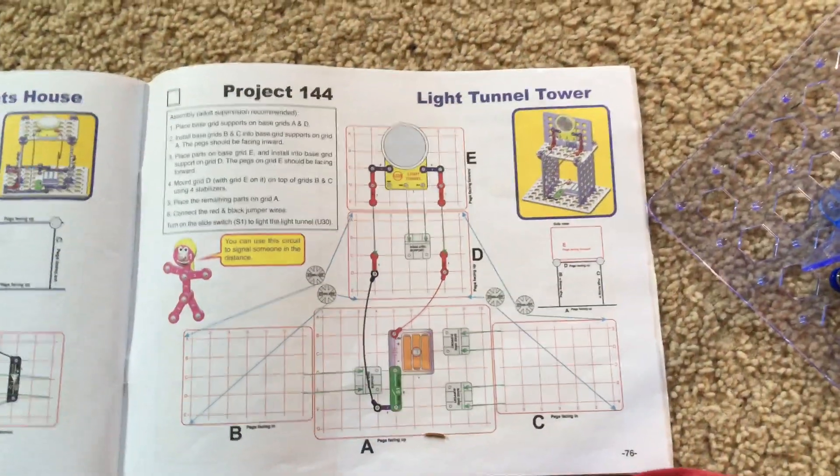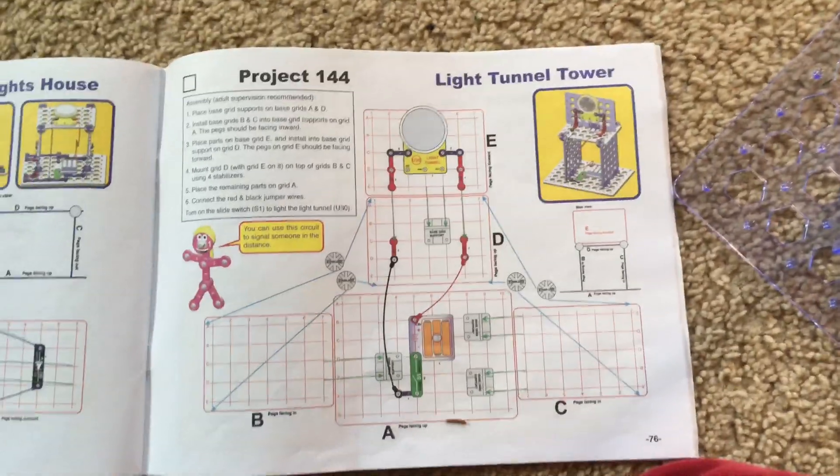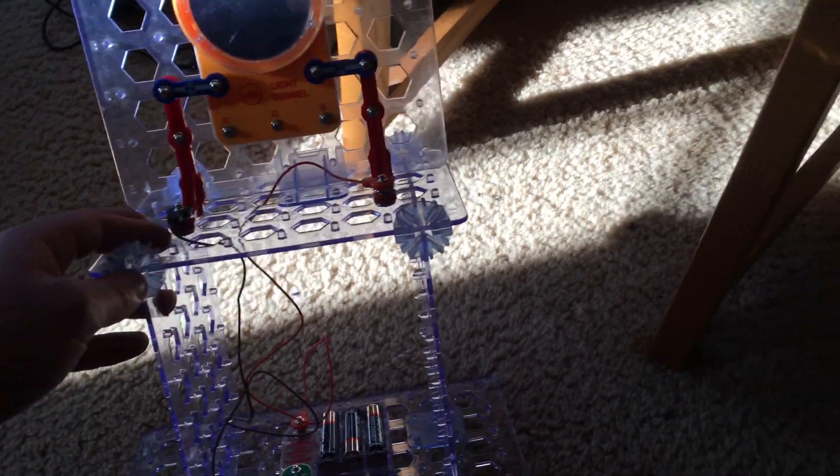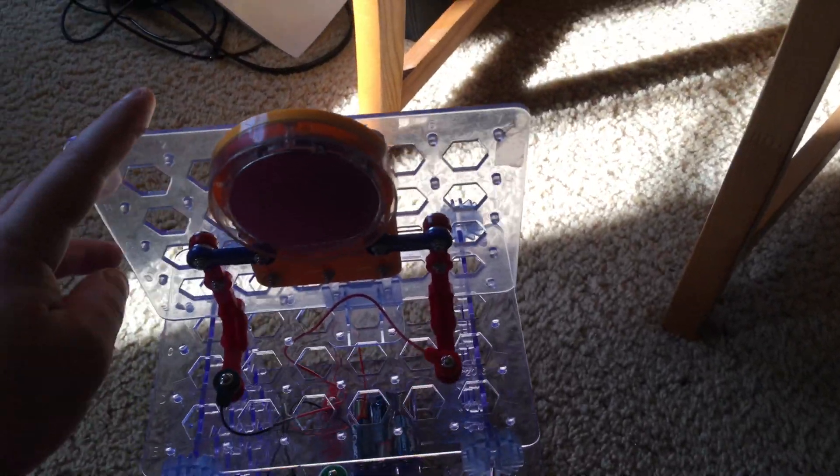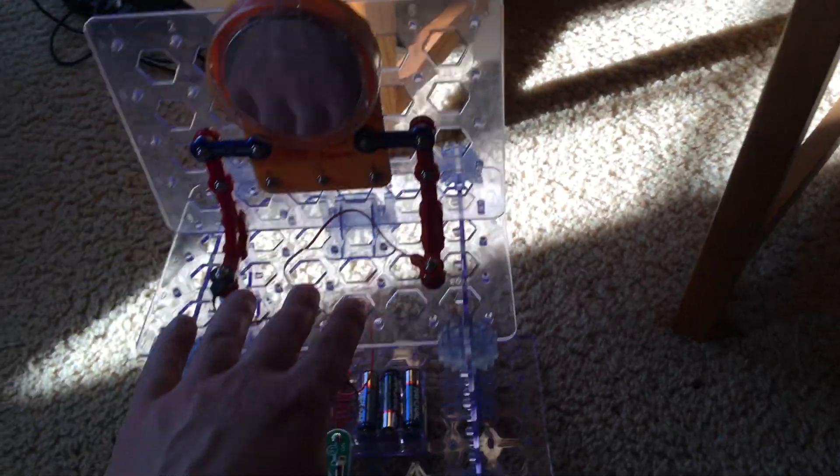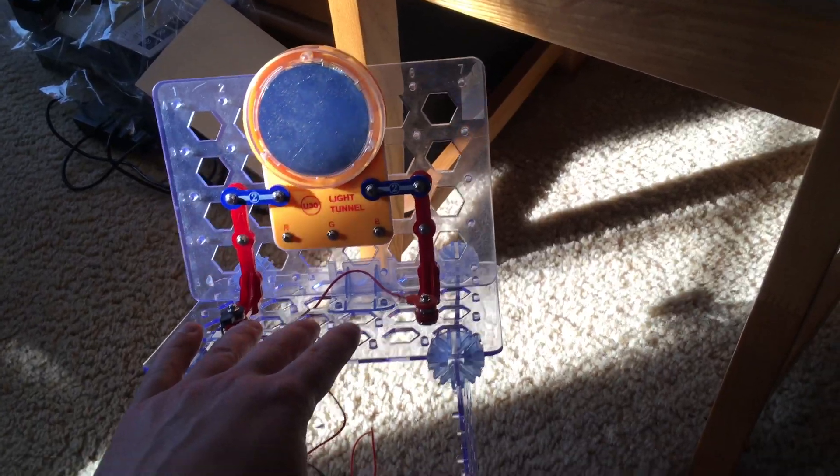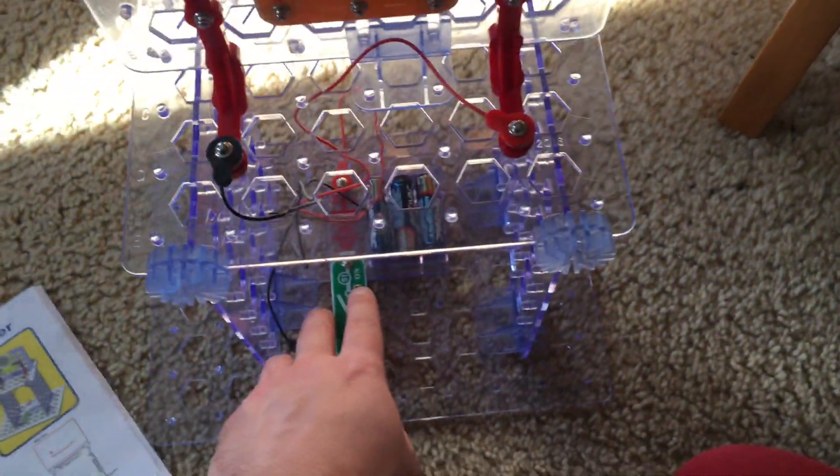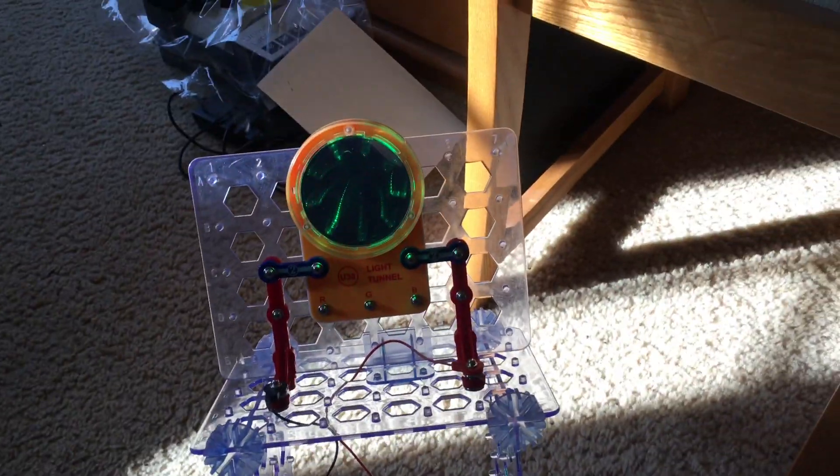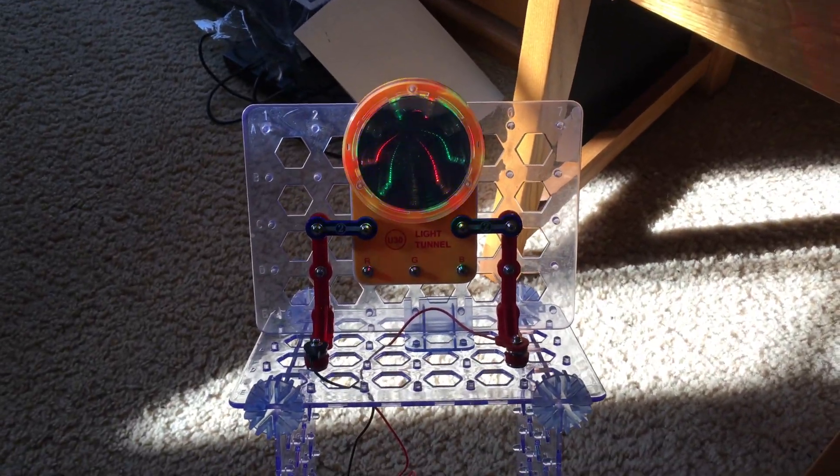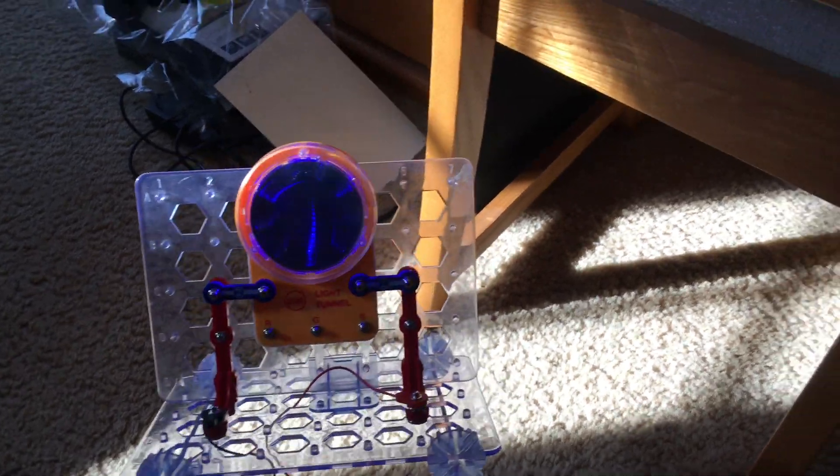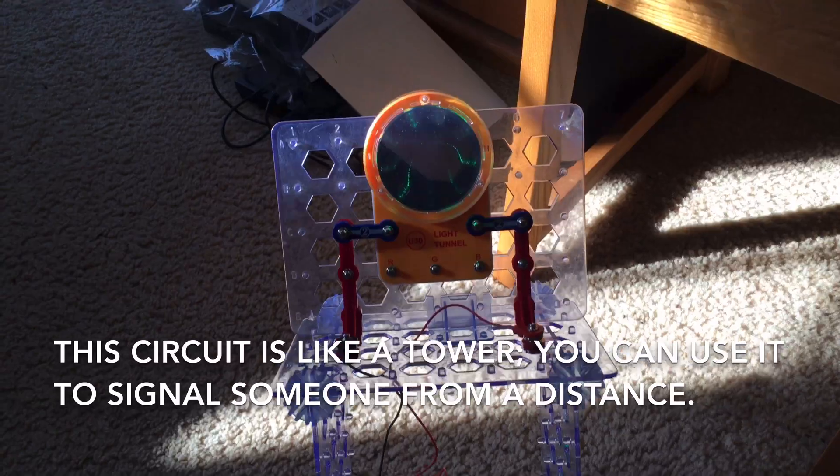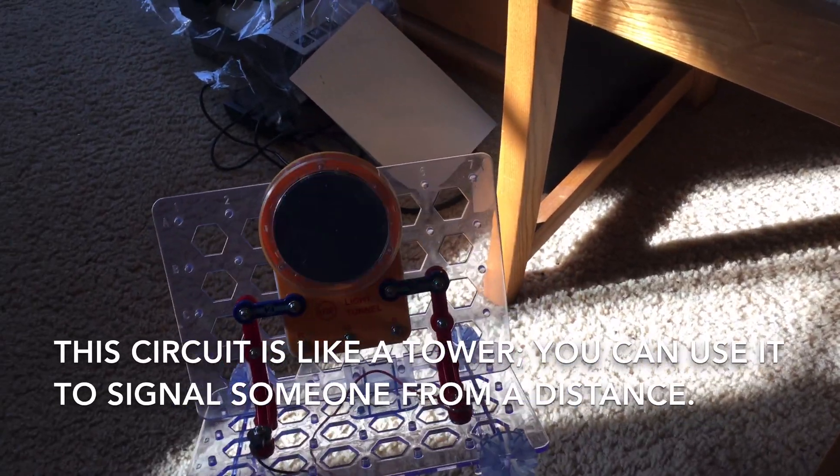Project 144, light tunnel tower. We are going to use this circuit which is unique because one of the base grids is mounted at a very high level. We will turn on the slide switch and the light tunnel comes on.